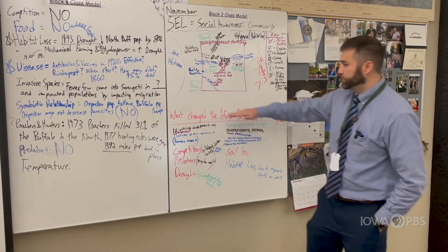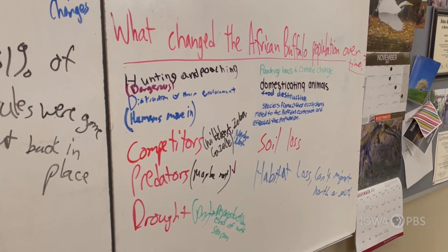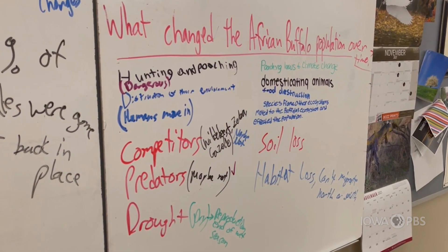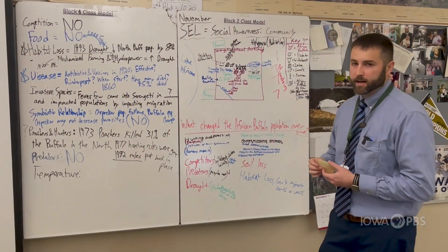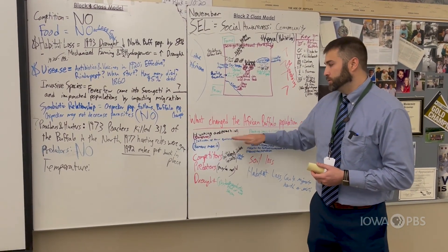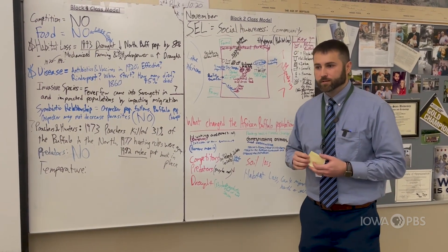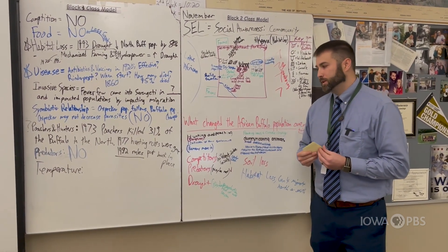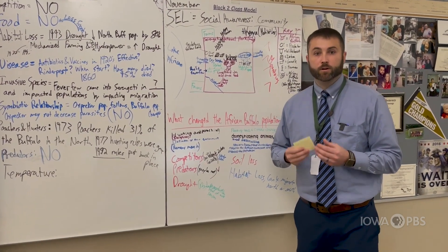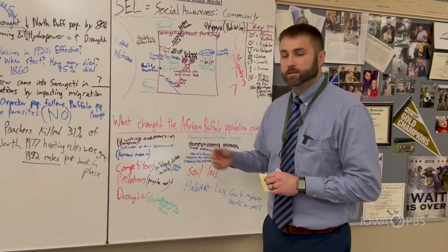I just started off with this question up on the board: what changed the African buffalo population over time? The driving question board would be: what questions could you ask to help us figure out if hunting and poaching is the main reason why the population decreased? Some questions that you'd hope students would generate would be: how many people live in the Serengeti? What are the laws they have in the Serengeti about hunting and poaching?